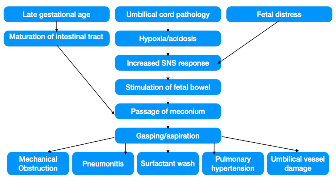Late gestational age can lead to maturation of the intestinal tract causing passage of meconium in utero. Additionally, umbilical cord pathology or placental pathology can lead to hypoxia or acidosis of the fetus, increasing sympathetic nervous system response and stimulating the fetal bowel. Fetal distress will also cause this by increasing sympathetic response and stimulating the fetal bowel to pass meconium.